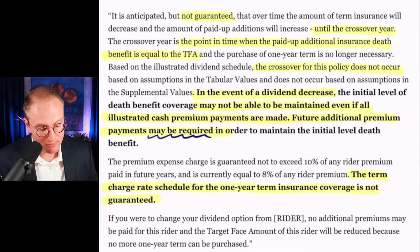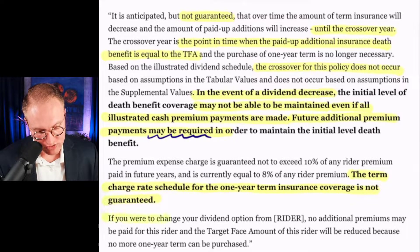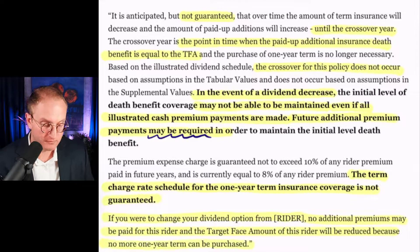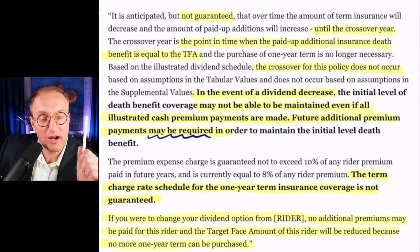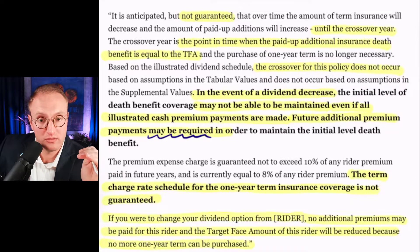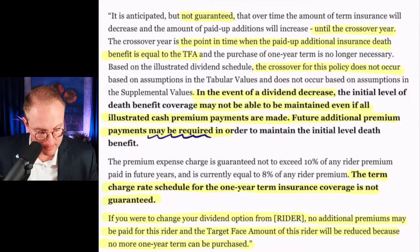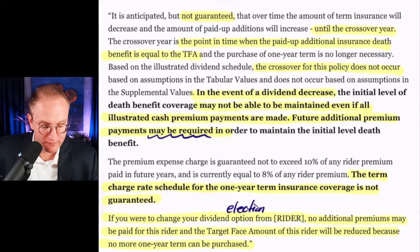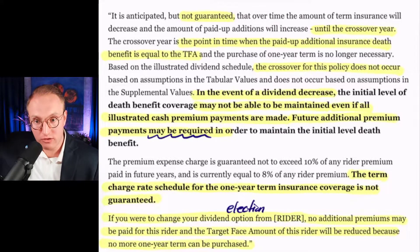In this particular rider, the dividend must pay the rider premium. Here's the language: 'If you were to change your dividend option from the rider, no additional premiums may be paid for this rider, and the target face amount will be reduced because no more one-year term can be purchased.' Think about what that means. The term rider is here to prevent MEC status from occurring. Maybe I want to follow what Nelson said and take the dividend and apply it all to the PUA. Okay, well, that's going to involve changing the dividend election from paying the rider premium to pure PUA. Well, then I lose that additional death benefit, and continued PUA premium might cause a MEC.